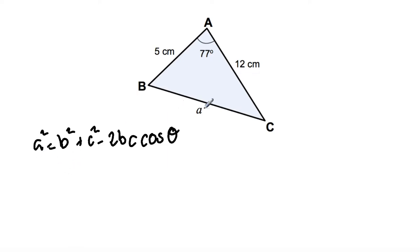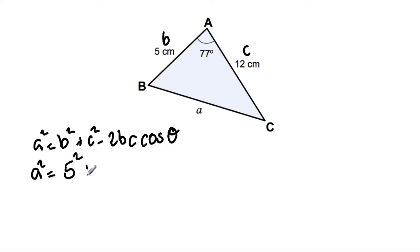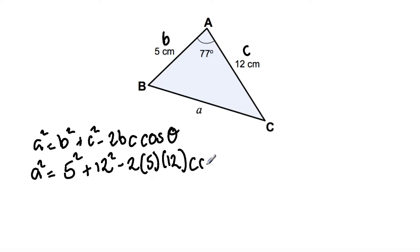A is always opposite the angle given to us. I'm going to label this side B and this side C. Substituting all the information into the equation, we have A squared is equal to 5 squared plus 12 squared minus 2 times 5 times 12 cos 77 degrees.